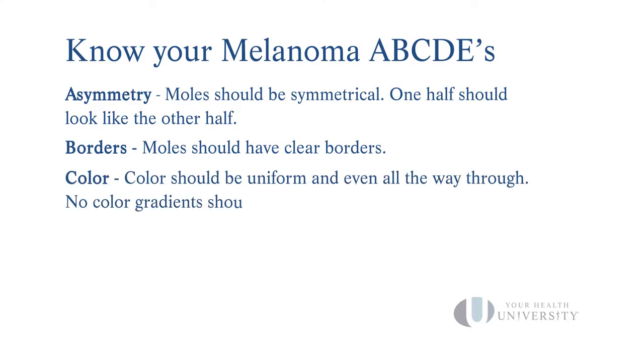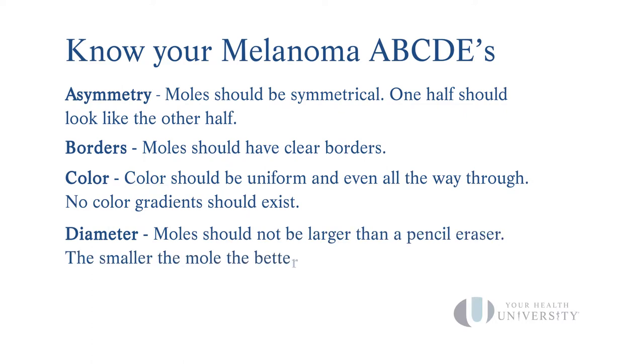C is color. We like the color to be uniform throughout. We do not like the color to be black — our preferred color is a nice even brown. D is diameter, and we'd like them to be small — less than the diameter of a pencil eraser. A lesion that's above that could be concerning.